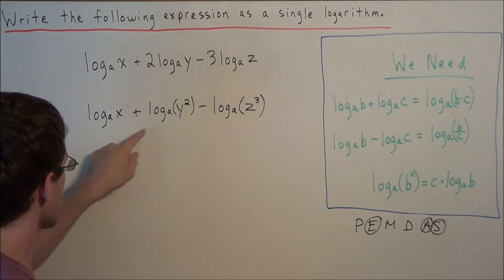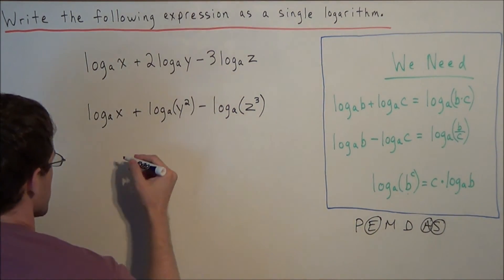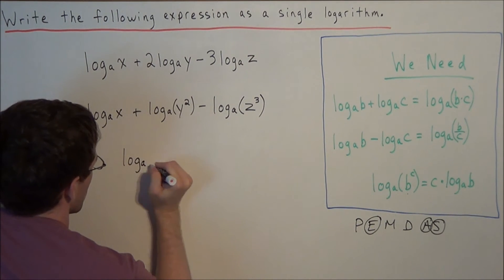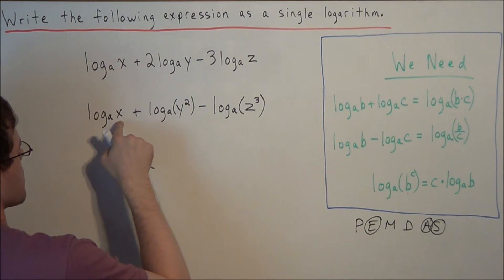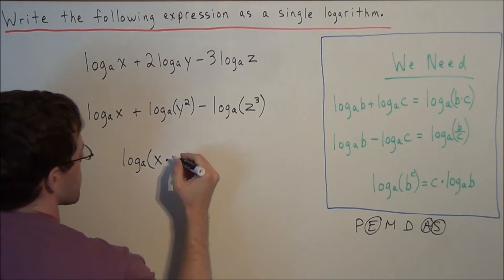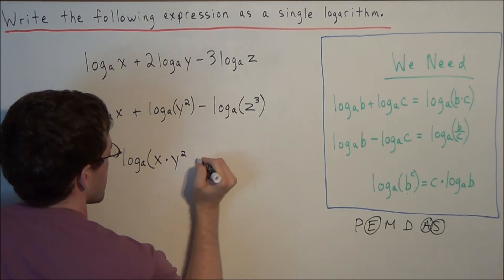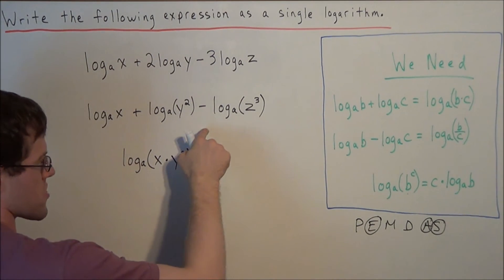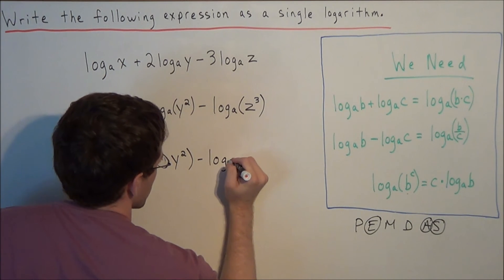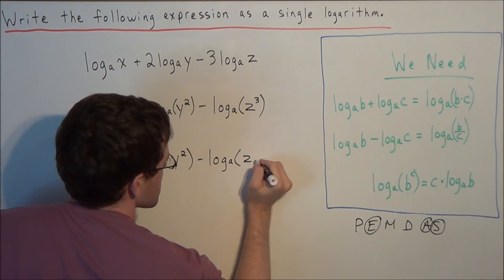So we combine these two pieces here into log base a, and now we're going to multiply the first inner term x times the second inner term y squared. And we just attach the rest. Minus log base a of z to the third power.